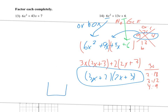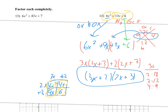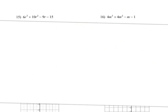I'll go ahead and do that FOIL check: (3x + 2)(2x + 3) gives 6x squared, then 9x, then 4x, then 6. So we get 6x squared plus 13x plus 6. You can see that matches our original equation — 6x squared, the two middle terms add up to 13x, and then the 6 at the back. That means the answer checks out.